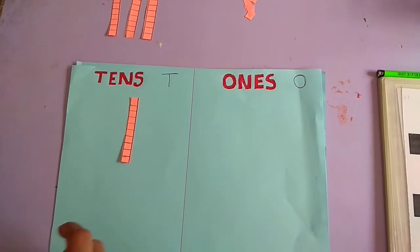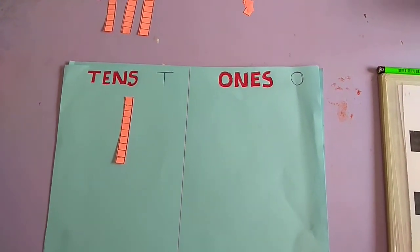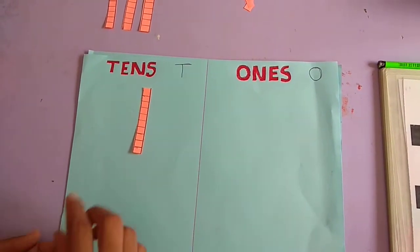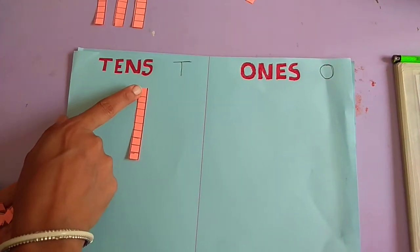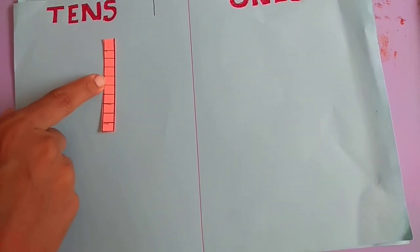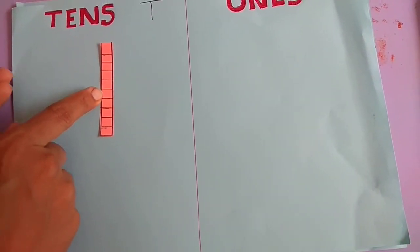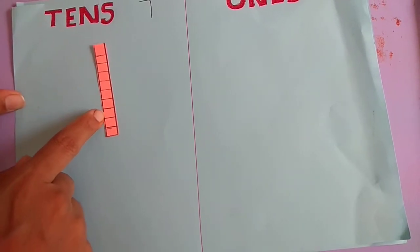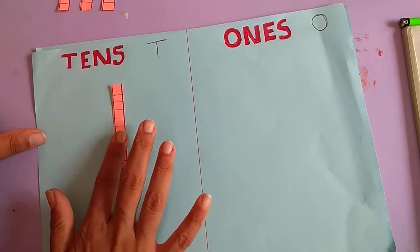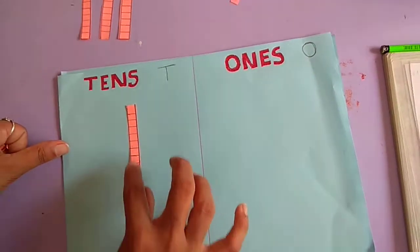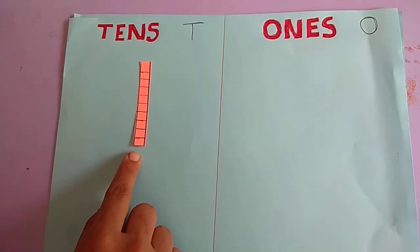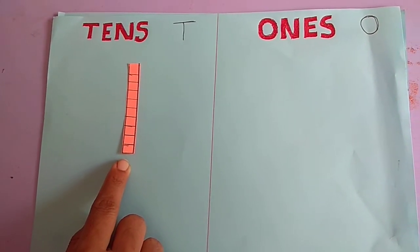क्योंकि देखो, इसमें 10 units मिलके 1 block बनता है। एक count किजिए: 1, 2, 3, 4, 5, 6, 7, 8, 9, 10. हैना? These are 10 units. मतलब छोटे-छोटे 10 units मिलके बन गया — 1 ten. Yes, समझ में आगया।